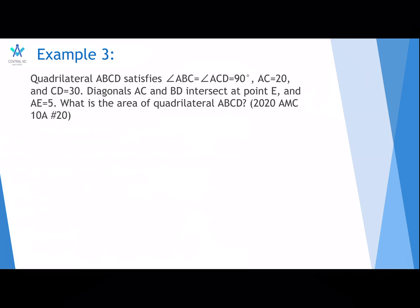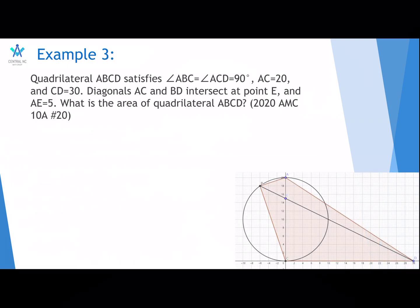Third example, quadrilateral ABCD satisfies angle ABC equals angle ACD equals 90 degrees, AC equals 20, and CD equals 30. Diagonals AC and BD intersect at point E, and AE equals 5. What is the area of quadrilateral ABCD? This is from the 2020 AMC 10A, 20th problem. Here's the diagram.